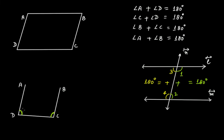Just as angle 1 plus angle 2 equals 180 degrees by the co-interior angles property, angle D plus angle C equals 180 degrees. Similarly, for angles B and C, we consider the parallel lines AB and DC with BC as the transversal, and therefore angle B plus angle C equals 180 degrees.